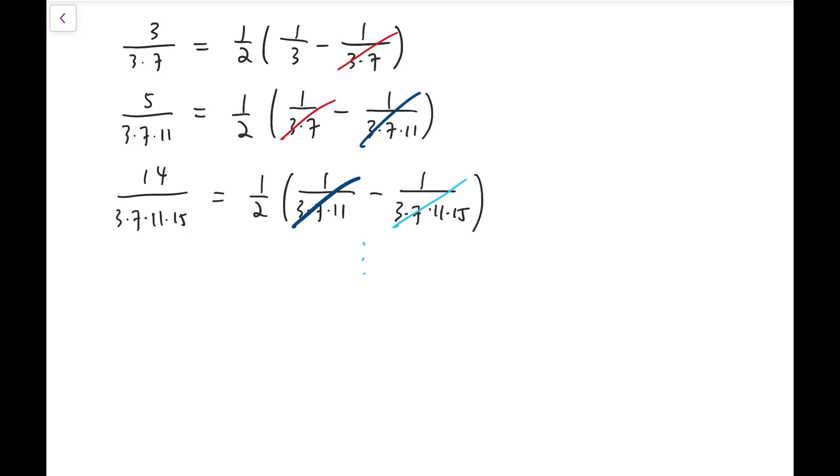So, in fact, for the terms in our sequence, which means from this column, for the nth term, it's the nth odd number, so that's 2n minus 1, and then for the denominator, it's the product of the first n numbers that are of the form 4k plus 3.